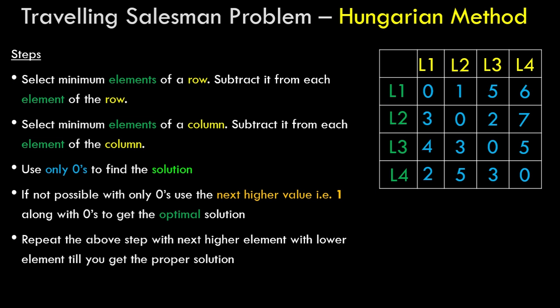A bit of theory about the traveling salesman: consider you have a company with a salesman who is supposed to travel to five different locations, and we have to optimize the time and cost. The traveling salesman problem deals with reducing the time or cost for that salesman to travel through all those cities in the best way possible.